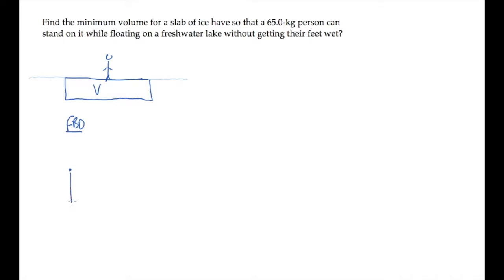Two forces act on this slab. There's the combined weight of the ice plus the person, and there's a buoyancy force that is directed upwards. The slab of ice and the person are in equilibrium, so if we add all these forces together, they sum to zero. And that tells us that the buoyancy force equals the combined weight of the slab of ice plus the person.